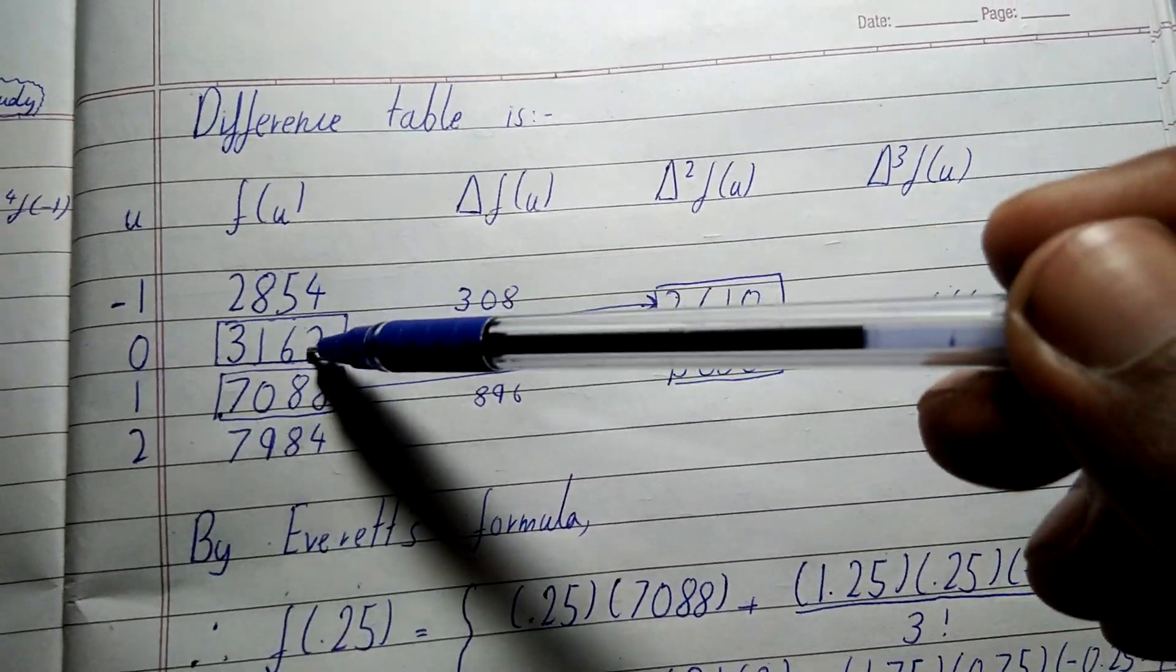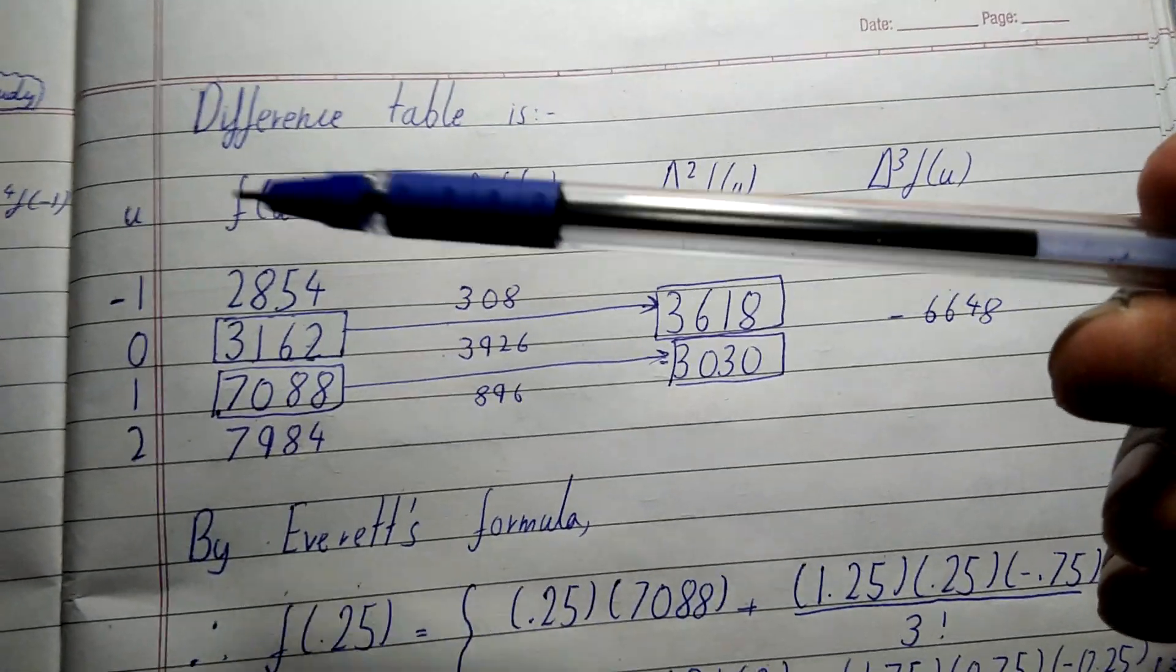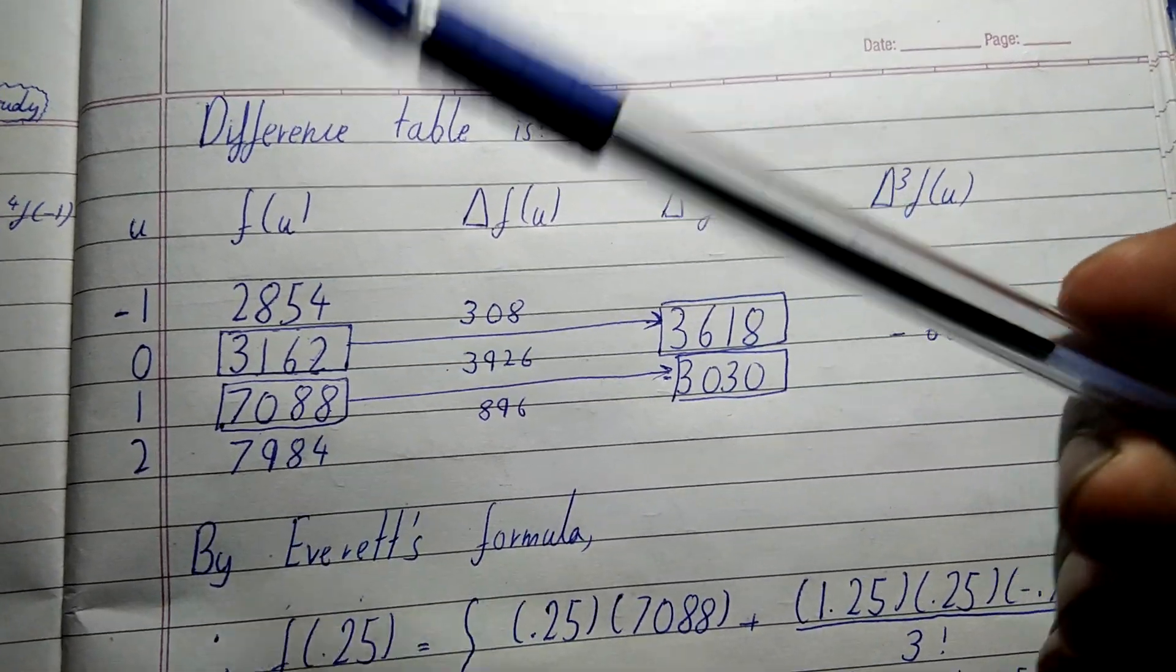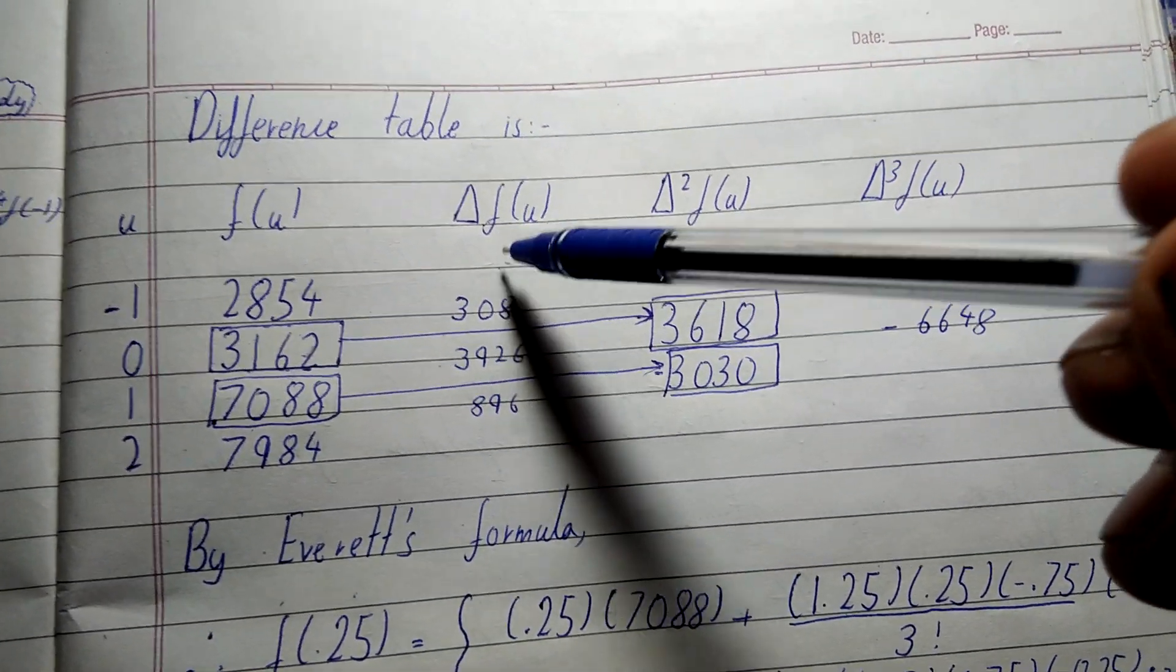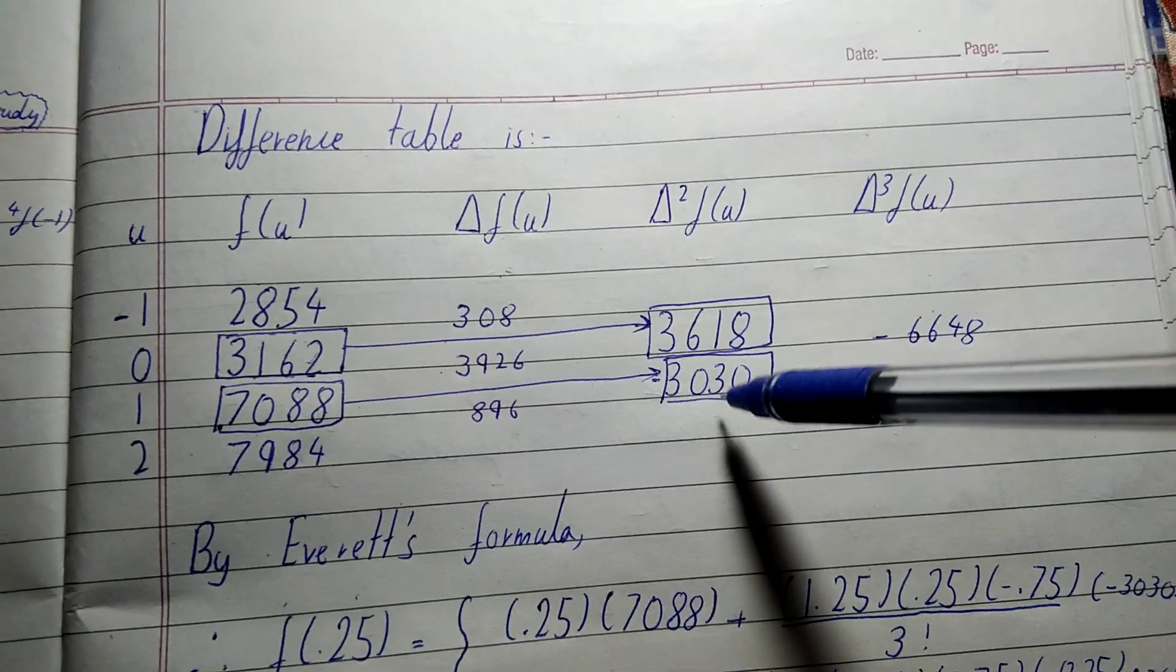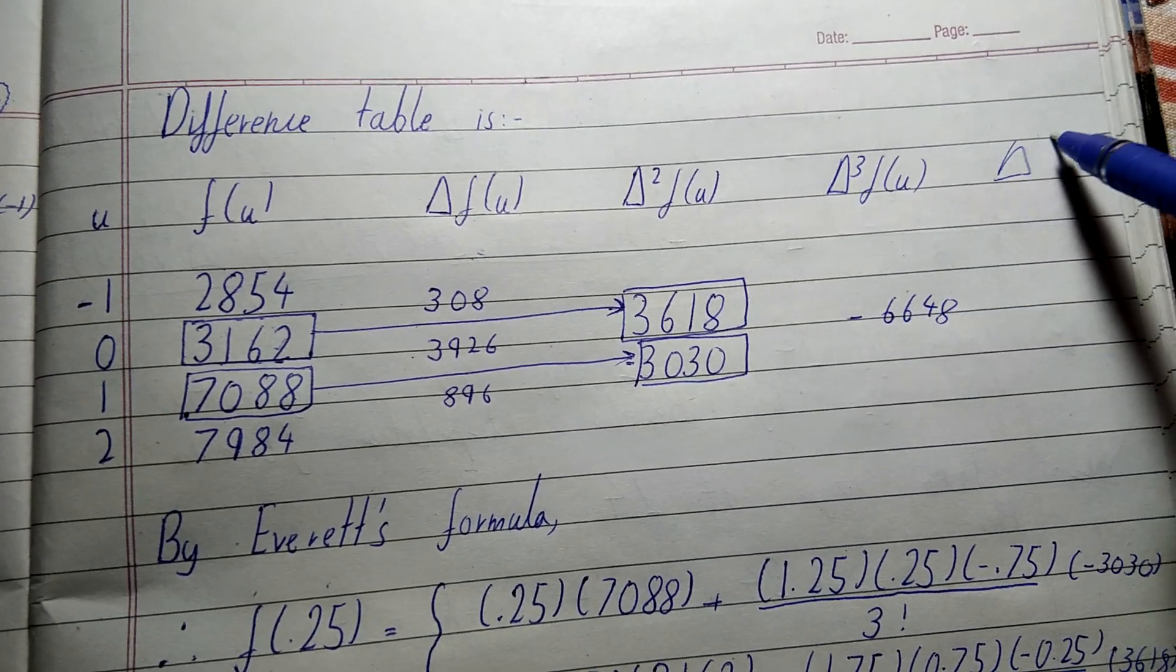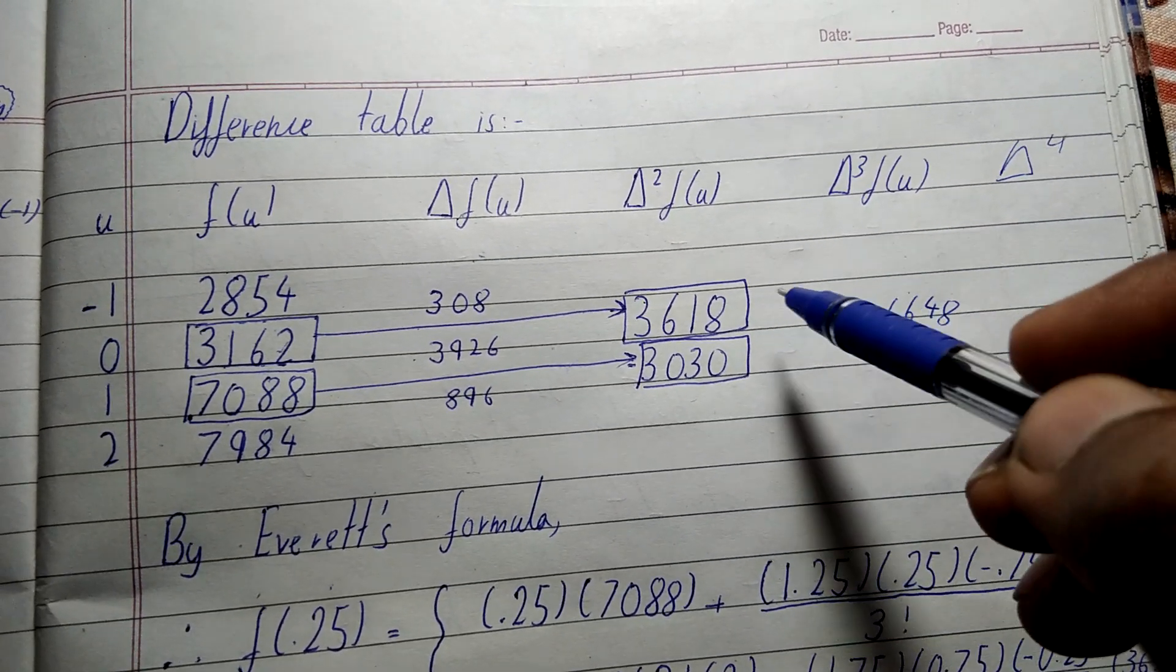And what we will do is we will not take this one; we will just jump from here to here. You can see that. And if Δ⁴ also would have existed, then we would have jumped from here to here and would have left this value.